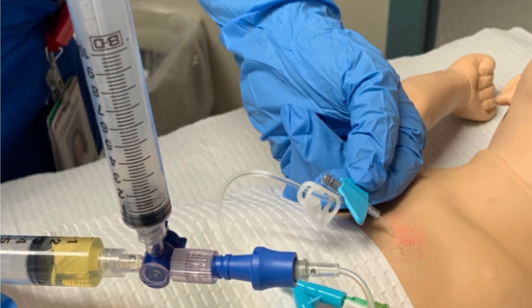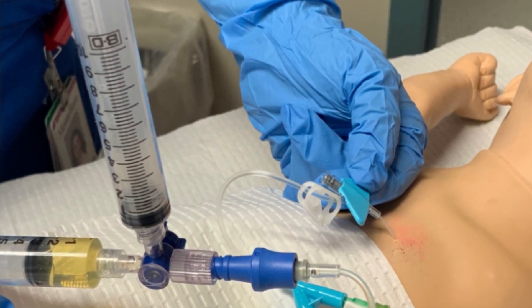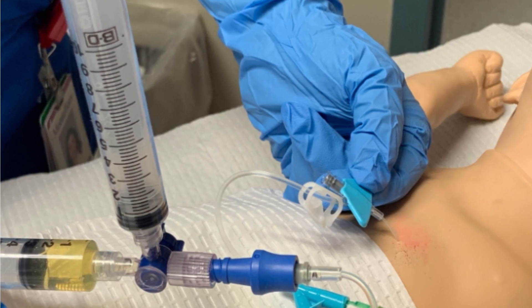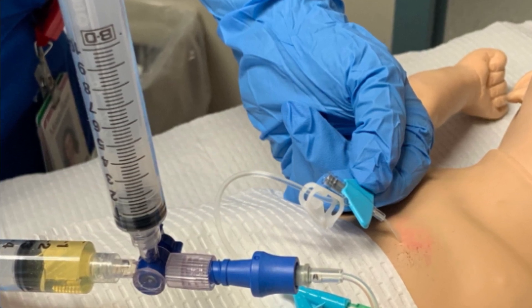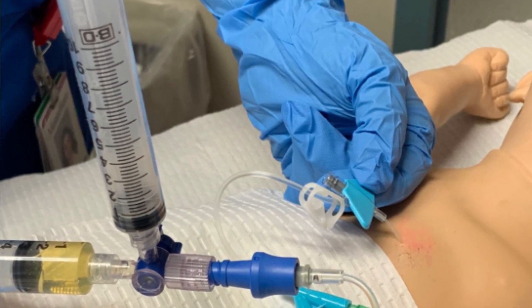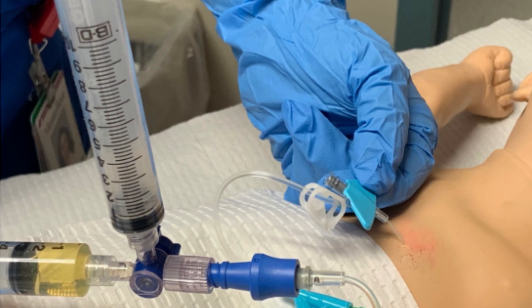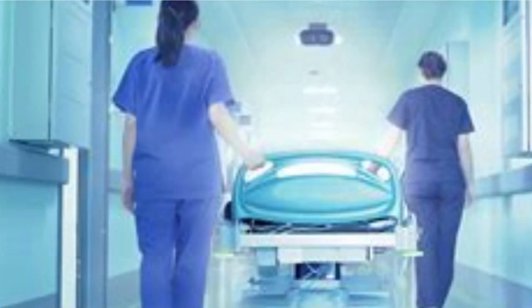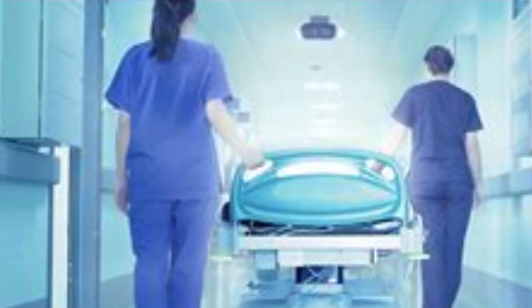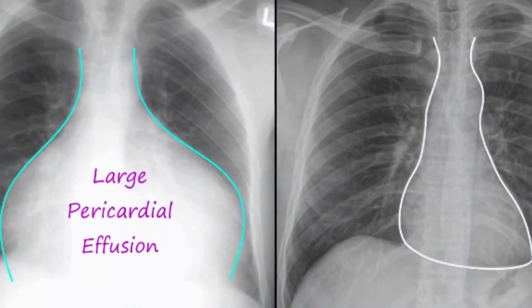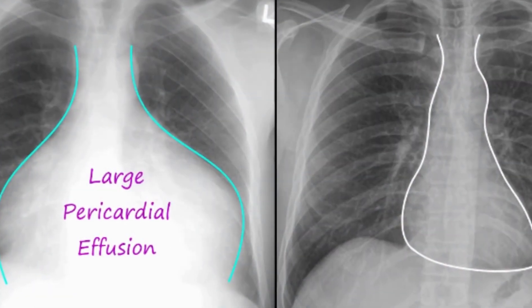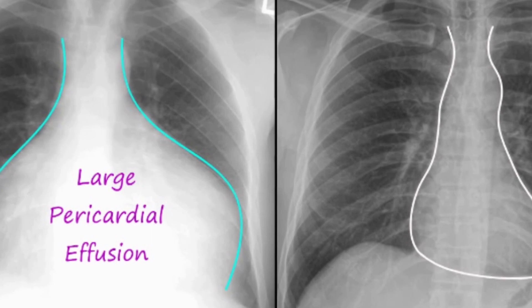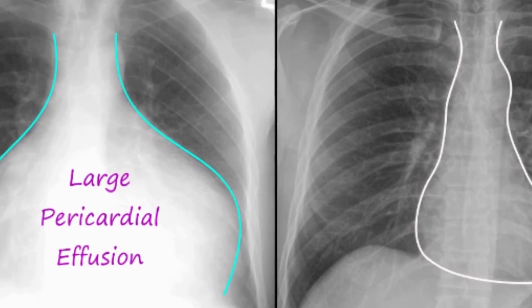Pericarditis often causes sharp chest pain. The chest pain occurs when the irritated layers of the pericardium rub against each other. Get medical advice if you have chest pain. Tests to be done for pericarditis include a chest X-ray to see the size of your heart and any fluid in your lungs.